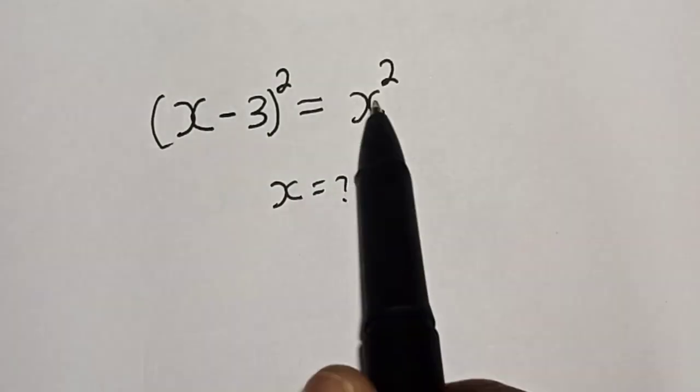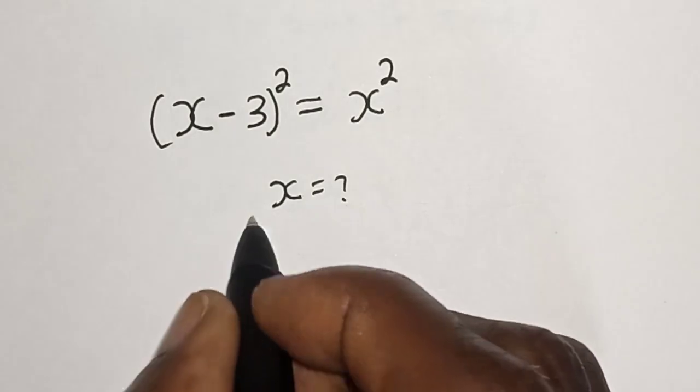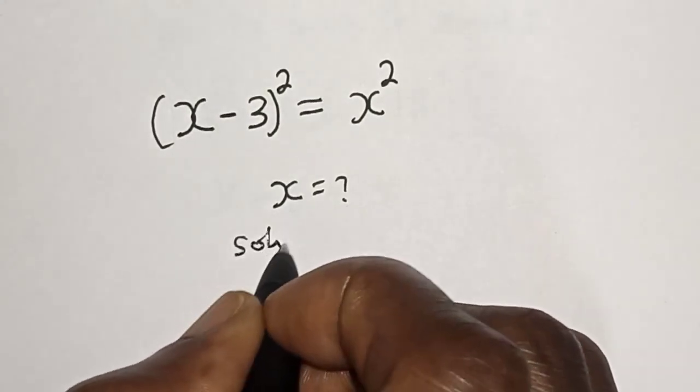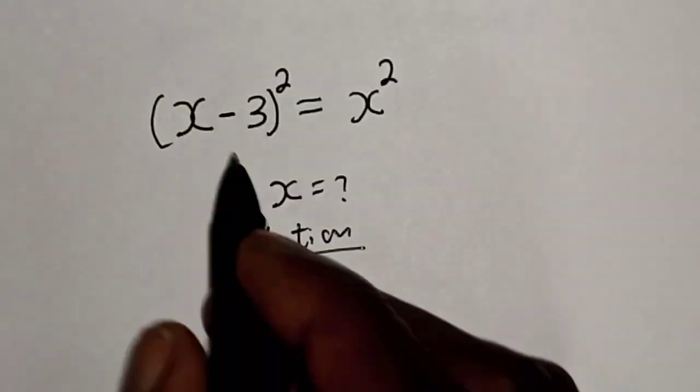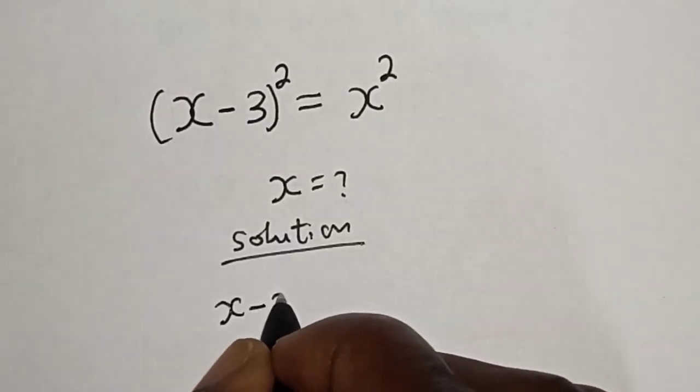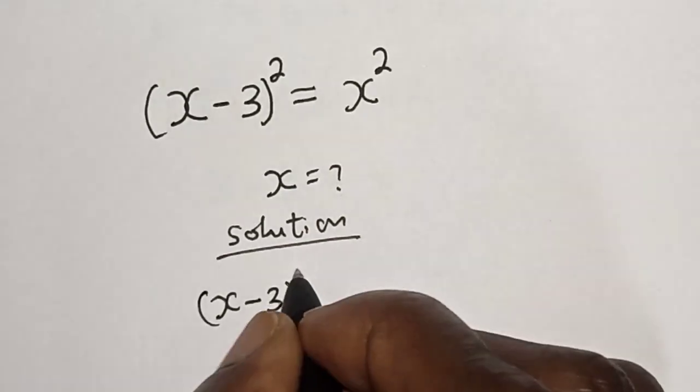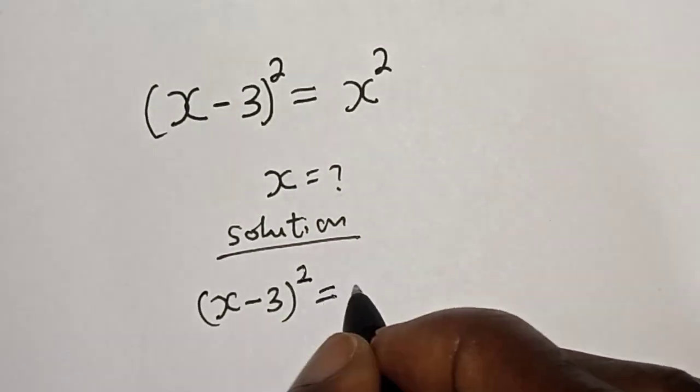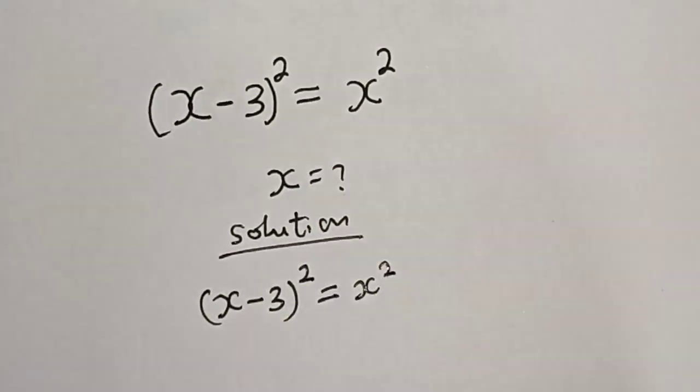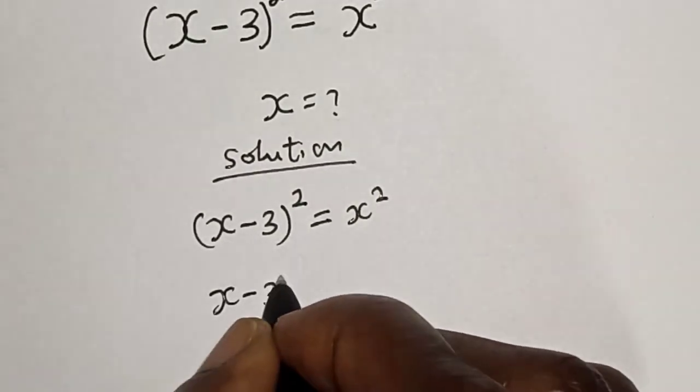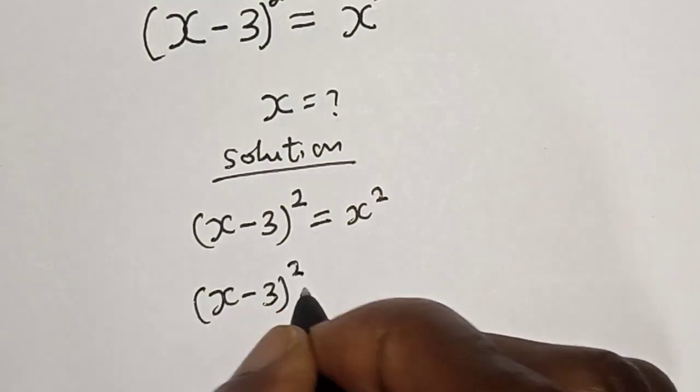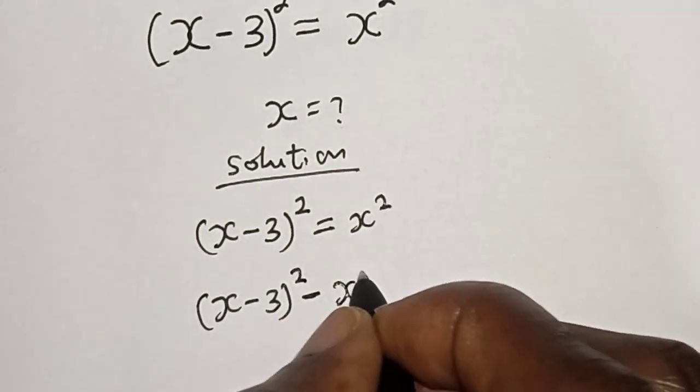Solution. We have x minus 3 all square is equal to x square. Then this is x minus 3 all square minus x square is equal to zero.